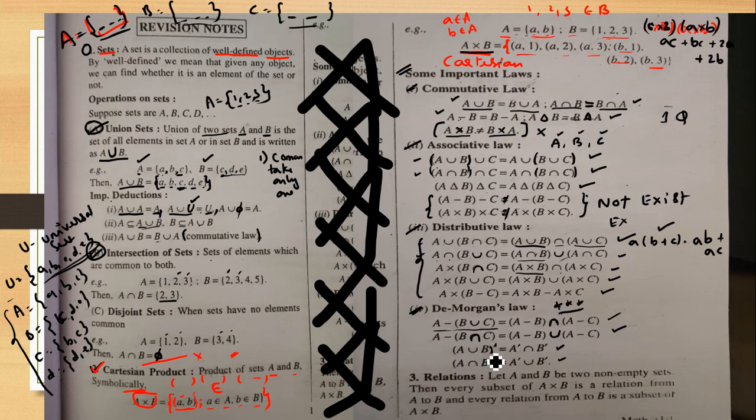De Morgan's complement form: (A union B) complement — written as (A union B) dash. The change is: A dash intersection B dash. So (A union B)' = A' intersection B'. And (A intersection B) dash: the result is A dash union B dash. So (A intersection B)' = A' union B'. The operator flips when complement is applied.